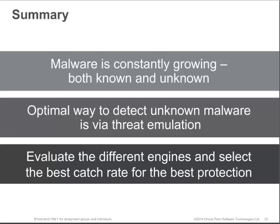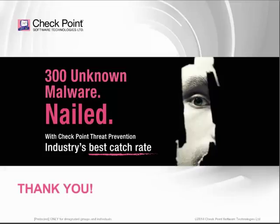In summary, we know malware is growing both in scope and in depth, in both known and unknown forms. We know that the optimal way to detect unknown malware is through threat emulation, where you can actually see what it's going to do in your environment and your network, and then determine what damage it may cause — and if malicious, stop it. Lastly, when evaluating different engine choices, selecting the one with the best catch rate makes the most sense if you're trying to ensure a secure environment. I'd like to thank you for listening, and I'd now like to open up the floor for any questions you may have.